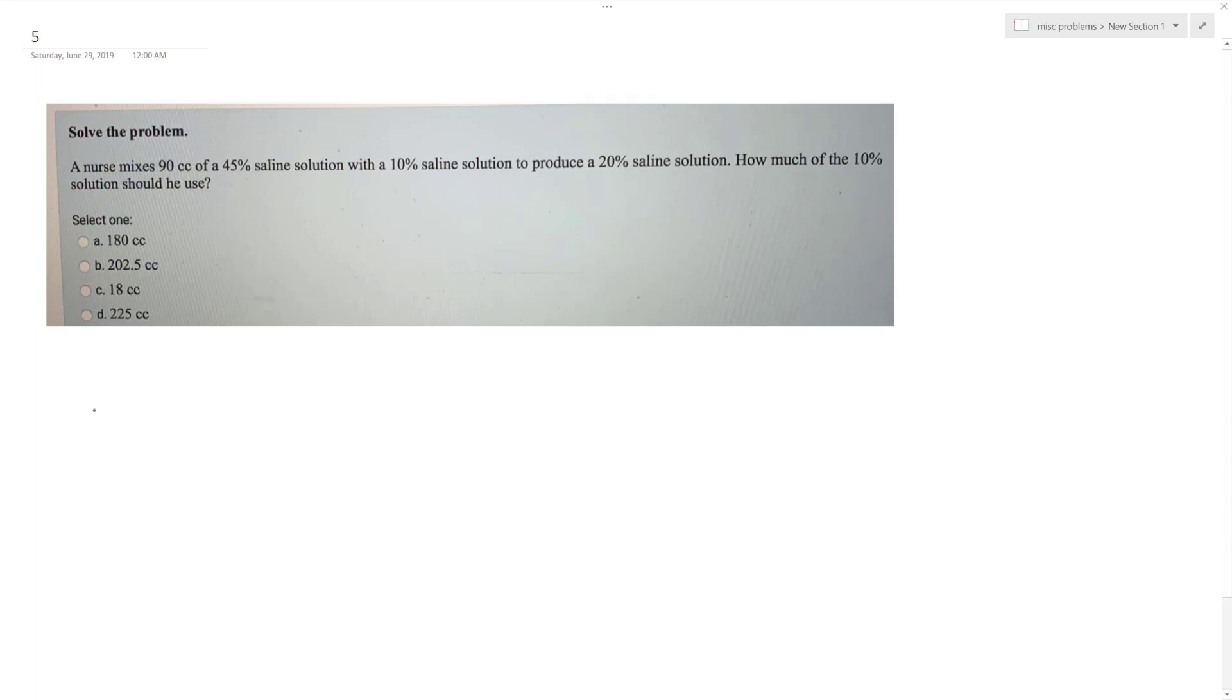To solve this problem, we've got 90 cc's times 0.45 (that's 45%), plus we don't know a value times 10% of whatever that amount's going to be. This is going to equal 90 plus x, because this is the amount of whatever we don't know that's 10% added to the 90 to give us 20%.